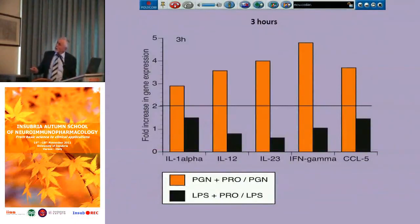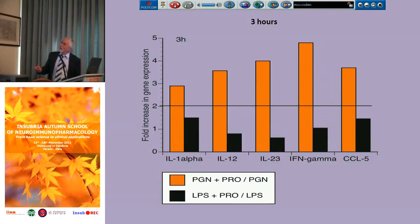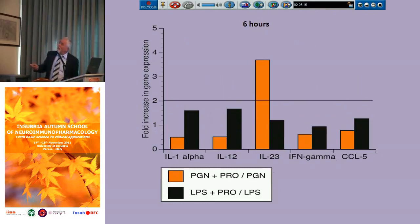At three hours, this graph represents the ratio of increased gene expression for various cytokines — specifically the ratio of peptidoglycan plus propranolol over peptidoglycan alone, and similarly for LPS. Only peptidoglycan in the presence of propranolol increased beyond the threshold of two that we took as the threshold for biological significance, increasing the expression of interleukin-1-alpha, IL-12, IL-23, interferon gamma, and CCL-5. At six hours, the only cytokine that remained elevated at the mRNA level was IL-23.